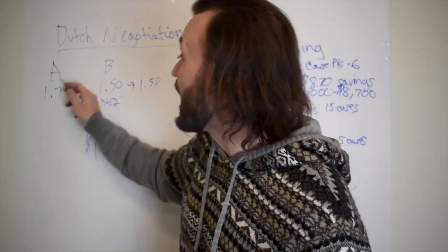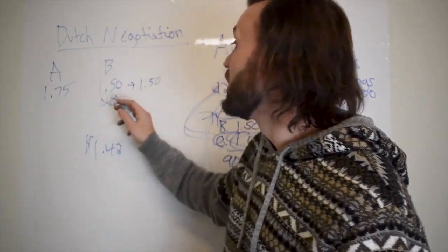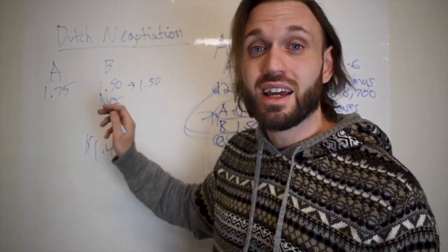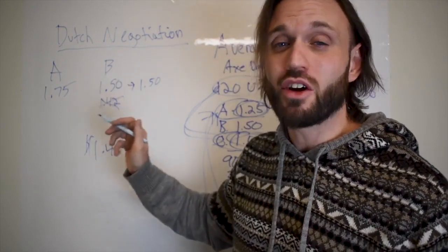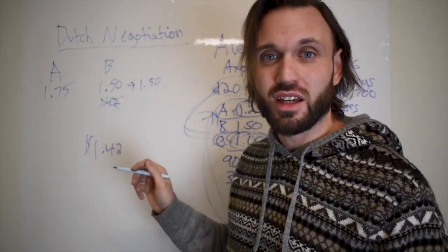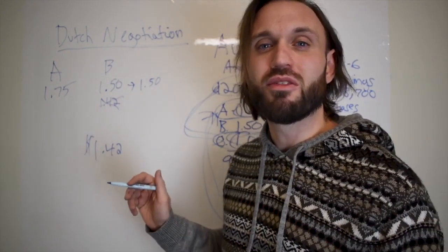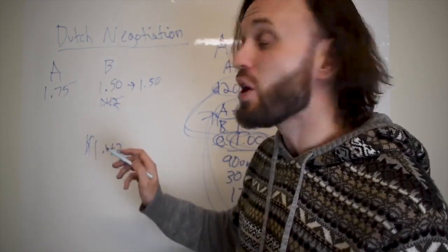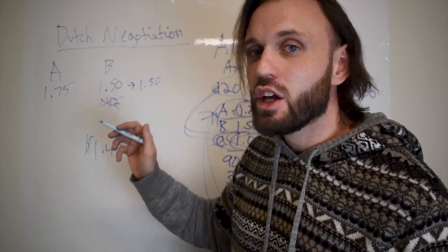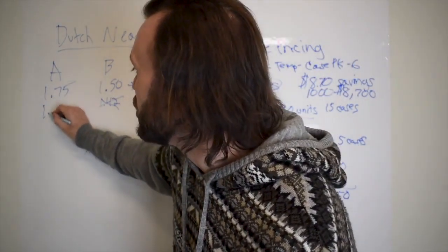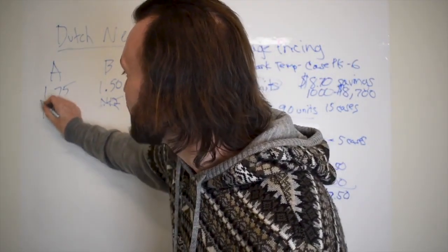So you're going to call distributor A and let them know that, hey distributor B has this product, your competitor has this product for $1.50. I need it for $1.42. Can you give it to me for $1.42? And distributor A, they may say, no, but we can give it to you for $1.45.